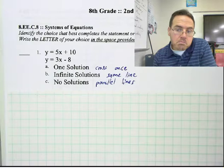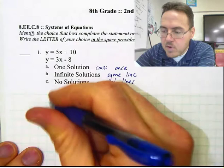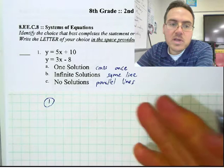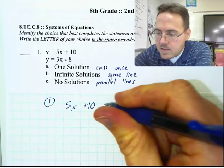Let's see if they could exist in the same place at the same time. I'm going to number my scrap paper like always. Because these are both equal to Y, I can set them equal to each other: 5X plus 10 is equal to 3X minus 8.